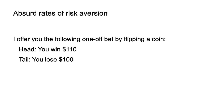Consider the following one-off bet involving the flip of a coin: heads, you win $110; tails, you lose $100. Suppose you reject — you would not be alone in doing this. There is ample evidence that people reject favourable low-stakes bets even when they have material wealth.